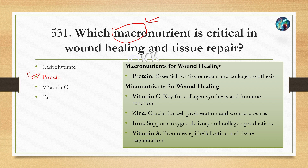The correct answer is protein. In healing, protein, vitamin C, zinc, and vitamin A all play important roles. Protein plays an important role in tissue repair and collagen synthesis. Vitamin C also plays an important role in collagen synthesis, and zinc supports cell proliferation.